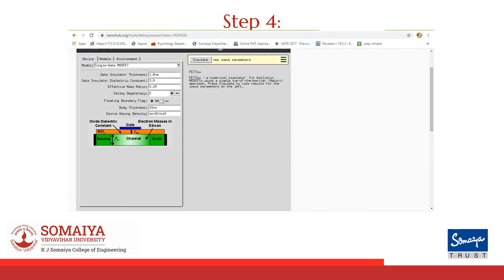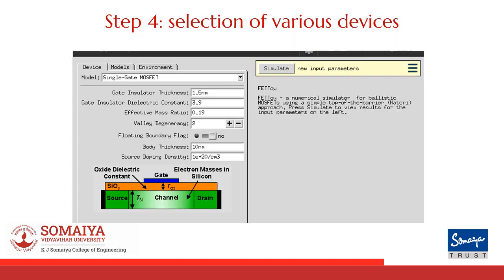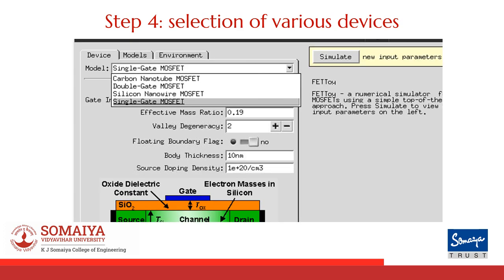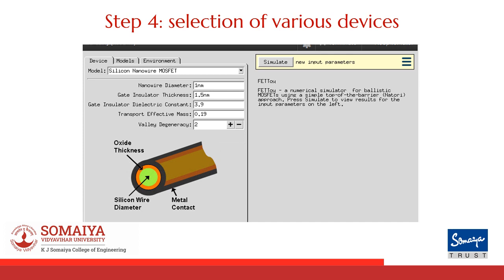You will be redirected to this page. Now if I zoom in, I can see the structure of the device, the parameters of the device, and I can also find a drop-down menu to select the device. As you can see, there are four devices available for selection. For example, if I select silicon nanowire MOSFET, the structure and dimensions will be displayed on the screen.